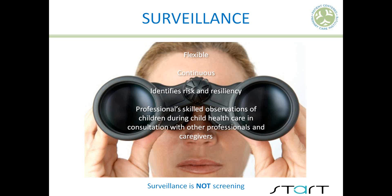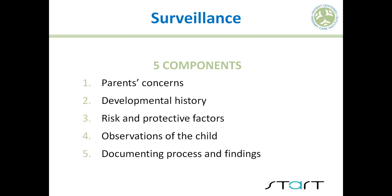Surveillance has five components: eliciting and addressing parents' concerns, which can increase parent satisfaction; taking a developmental history — that's where a checklist can play a part, though it's not screening; looking at family risk and protective factors that contribute to our clinical judgment; making observations of that child while in your office; and documentation.